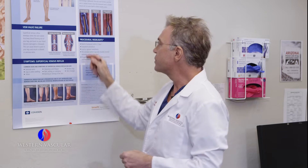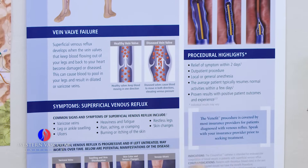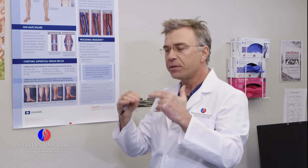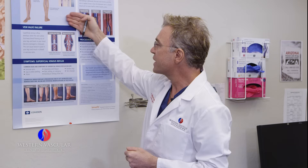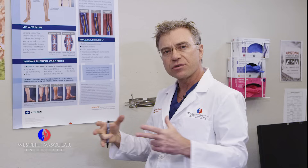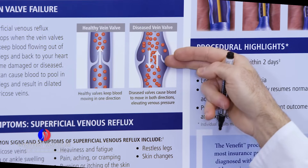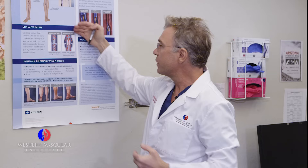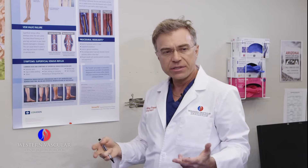Ultrasound shows us dilated veins with valves that are not functioning properly. The valves could be bent, worn out, or the vein itself can be dilated. When standing or sitting, the calf muscle pump causes blood to move back up toward the heart, but because the valves are not functioning and can't close properly, blood tends to pool in the lower legs, leading to symptoms.